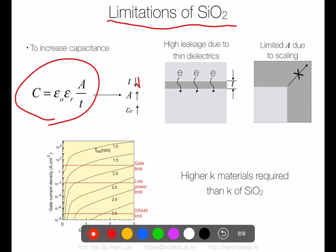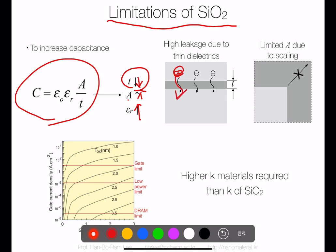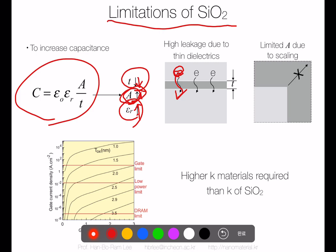The limitation of silicon oxide is that to increase capacitance, we have to decrease thickness or increase area or increase k. We have very limited lateral size — we cannot increase area. And decreasing thickness makes electrons easily penetrate to the gate side. So we have only one option: k must be increased. High-k material requires a k value higher than that of silicon oxide.